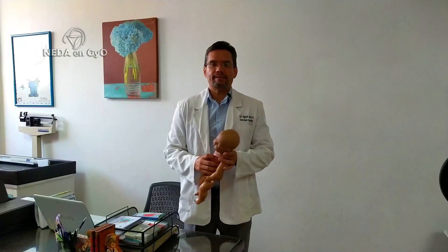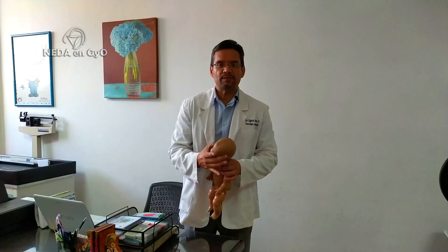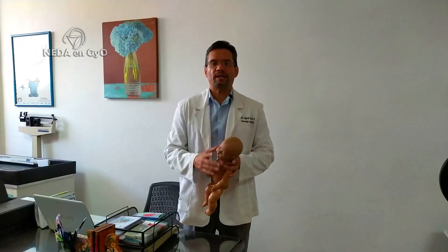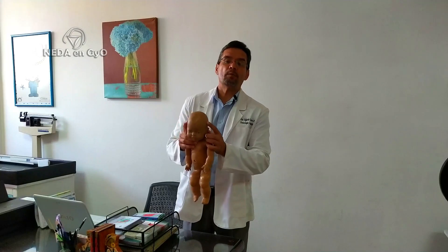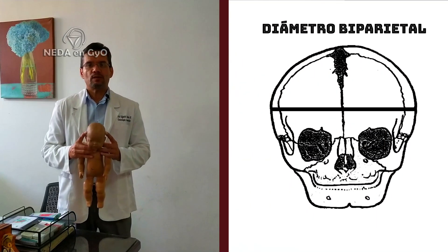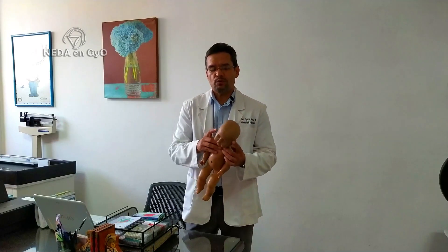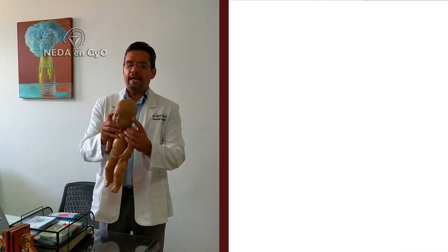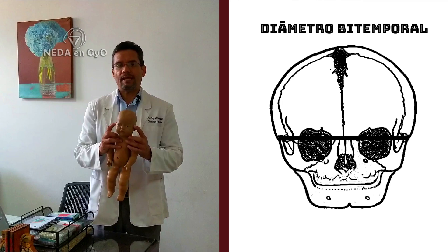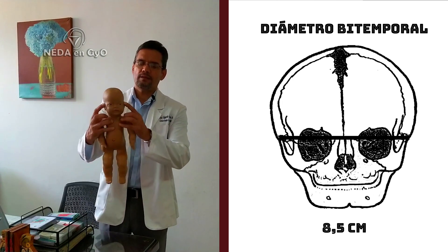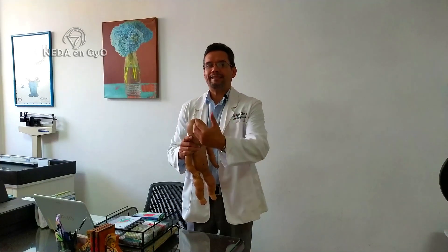En la cabeza fetal se describen tanto diámetros transversos como diámetros anteroposteriores. Dentro de los diámetros transversos tenemos el diámetro biparietal, formado entre las partes más sobresalientes de ambos parietales, que mide 9,5 cm. También tenemos un diámetro más pequeño, el diámetro bitemporal, entre ambos huesos temporales, que mide 8,5 cm. Esos son los diámetros transversos de la cabeza fetal.